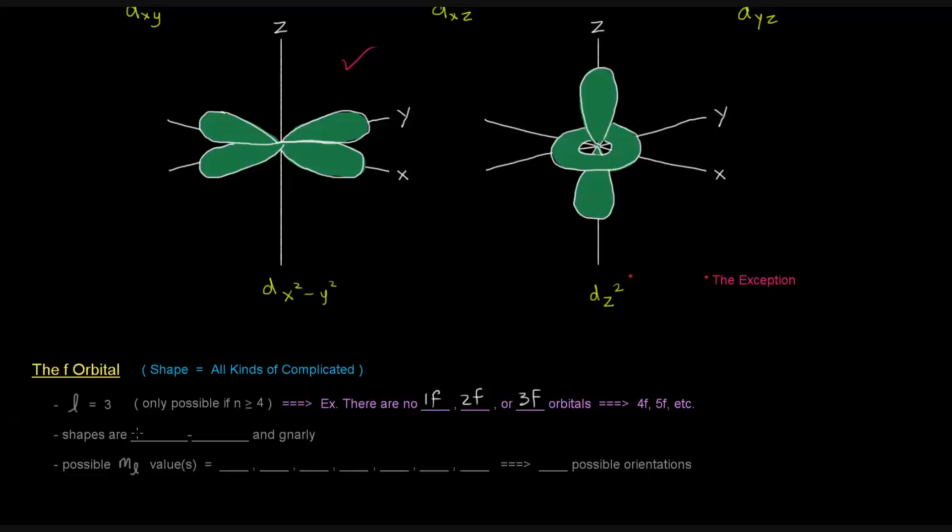The shapes of the f orbital are, like I said, all kinds of complicated. They are multi-lobed and gnarly.